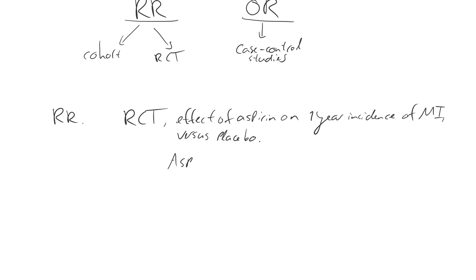Let's say the aspirin arm consisted of 1,000 people, of whom after one year, 100 developed a myocardial infarction and 900 developed no myocardial infarction. Let's say the placebo arm consisted of 1,000 people as well, of whom 500 developed a myocardial infarction and 500 did not.